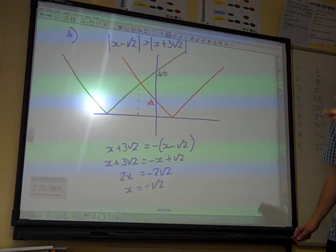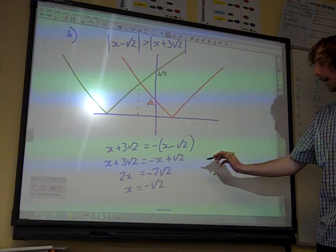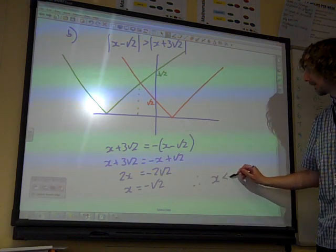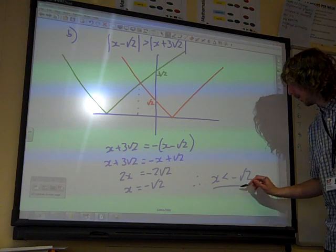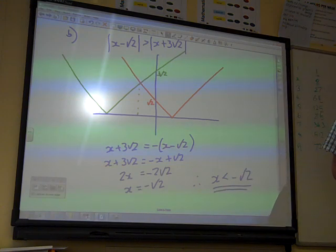And so, from our graph, seeing where things work out, we are now saying, therefore, X has to be less than minus root 2. And that is our answer.